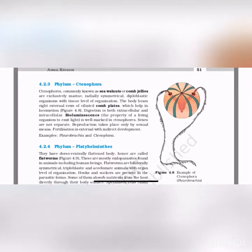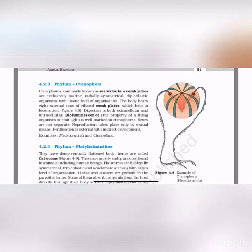Phylum Ctenophora: commonly known as sea walnuts or comb jellies, exclusively marine, radially symmetrical, diploblastic with tissue level of organization. The body bears eight external rows of ciliated comb plates that help in locomotion. Digestion is both extracellular and intracellular. Bioluminescence — the property of living organisms to emit light — is a characteristic feature well marked in ctenophores. Sexes are not separate; reproduction is only sexual; fertilization is external with indirect development. Examples: Pleurobrachia and Ctenoplana.